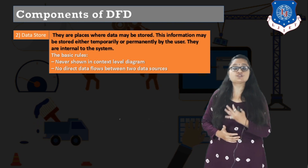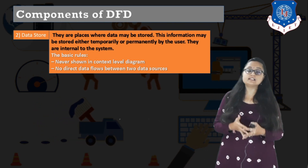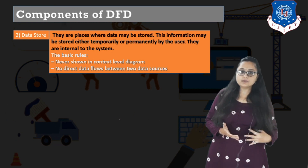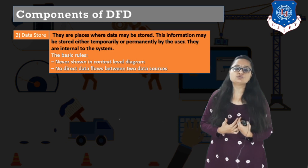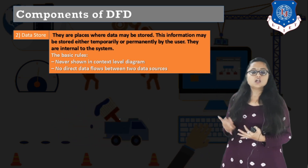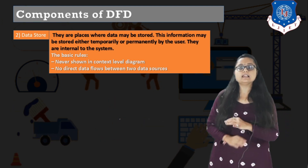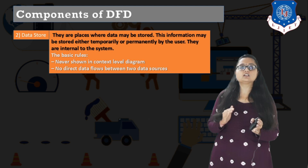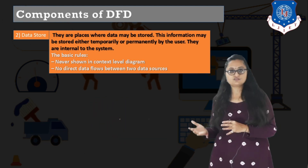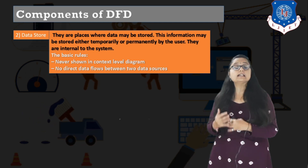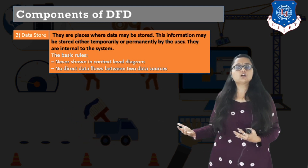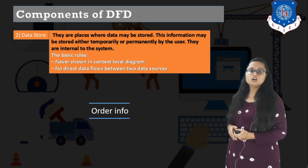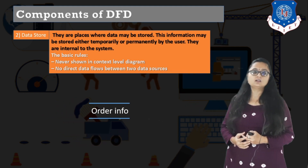The last component of DFD is a data store — the place where data is stored, similar to a database. That information may be stored either temporarily or permanently and they are internal to the system. The basic rule is it is never shown in the context level diagram. Also, there is no direct data flow from one data store to another — there must be a process in between. The symbol is two parallel lines with the data store name written inside.